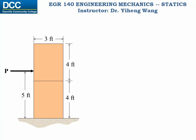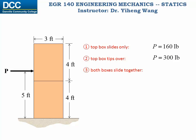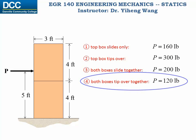Now we have analyzed all four situations. Summary: if the top box slides only, P = 160 lbs; if the top box tips over, P = 300 lbs; if both boxes slide together, P = 200 lbs; and if both boxes tip over together, P = 120 lbs. Through comparison, the minimum is 120 pounds, so both boxes will tip over together — that is the answer.